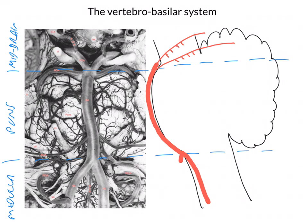Now let's look at these pontine branches. There are lots of these little pontine branches coming off supplying the pons. These are crucial arteries because passing through here is the corticospinal tract. If those pontine arteries get blocked — say, by a basilar artery stroke — we can actually destroy the entirety of the corticospinal tract. This can lead to the very tragic condition known as locked-in syndrome, where you're not able to move any of your limbs at all, only able to move your eyes, because the blood supply to the midbrain is preserved when only these vessels have been blocked.